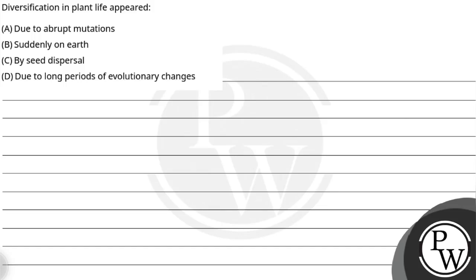Let's read the question. The question says: 'Diversification in plant life appeared —' with four options: A) due to abrupt mutations, B) suddenly on earth, C) by seed dispersal, D) due to long period of evolutionary changes. The key concept used here is diversification in plant life.